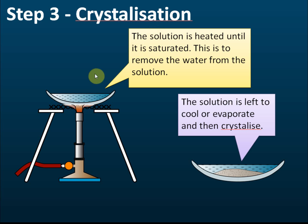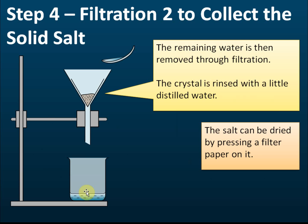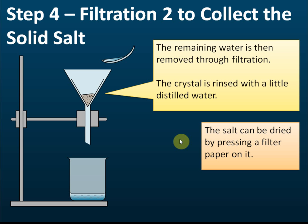After obtaining the pure salt solution, we follow the same process as for potassium/sodium/ammonium salts — crystallization. We heat the solution until saturated, then let it cool to form crystals. We then filter again so the water passes through and the salt crystals remain on the filter paper. The crystals are rinsed with a little distilled water, pressed with filter paper to dry, and we get our final product. Steps two and three are the same as for potassium/sodium/ammonium salts; the difference is only in step one.